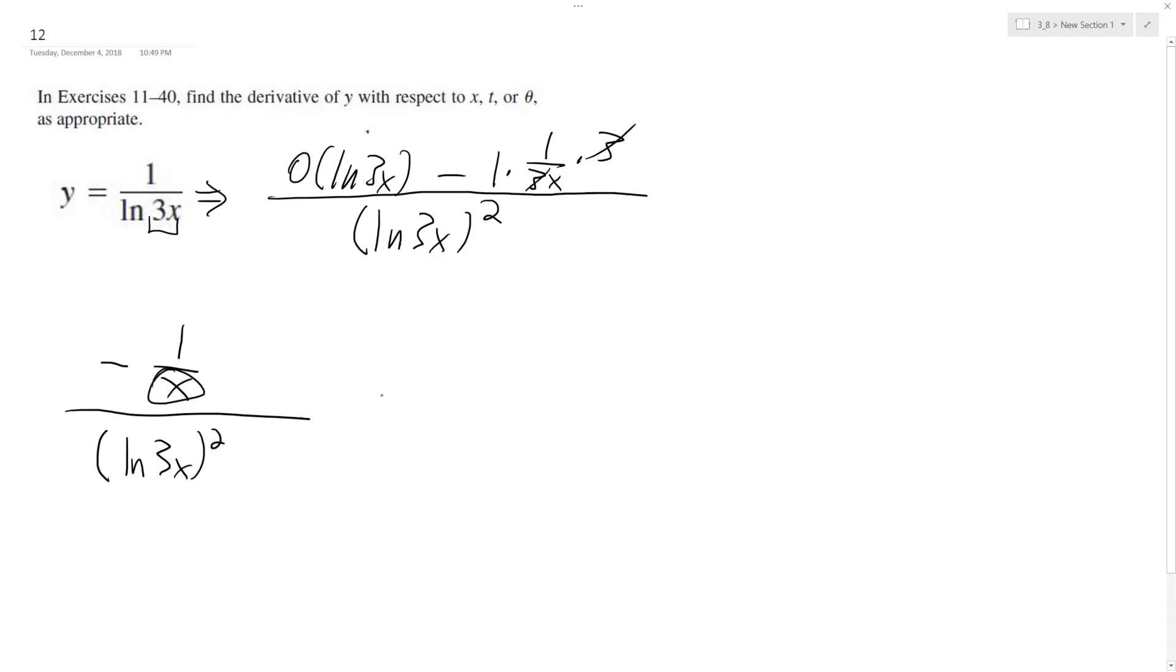3x squared. So with this we can move it to the bottom. So what we end up with is negative 1 over x times quantity natural log 3x squared.